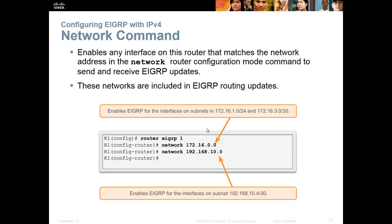That always creeps up on the CCNA somewhere, either with OSPF or EIGRP. They show you the show IP protocols command for each router and ask why these two are not forming an adjacency. You'll look and think the autonomous system numbers are the same, so you don't know why. But somewhere down in there it says hello time of 5 and hello time of 10 — these will not form an adjacency. So make sure you're aware of that.